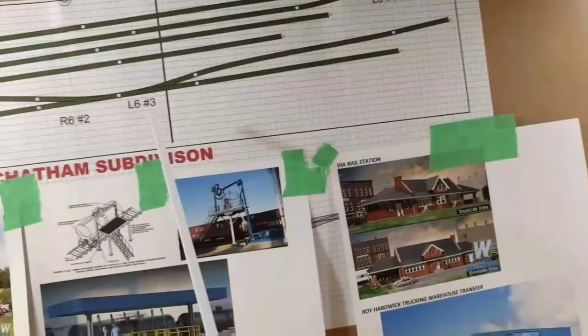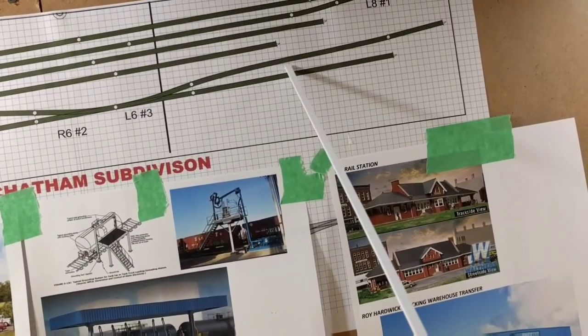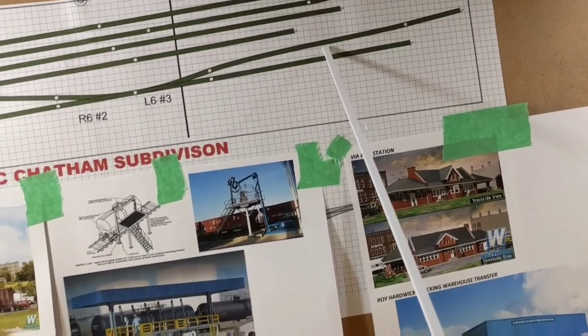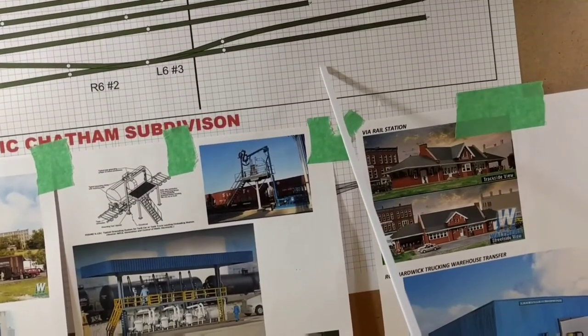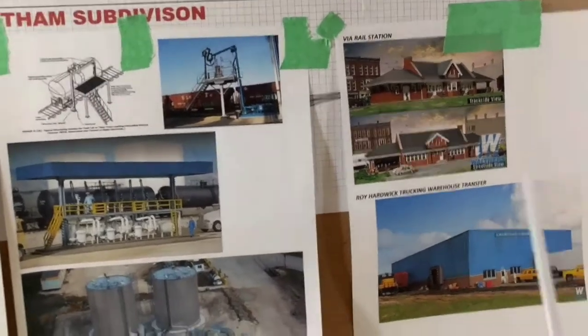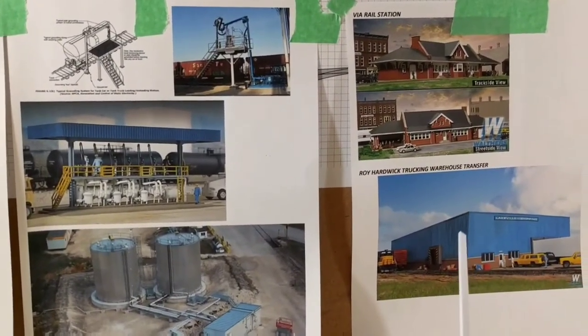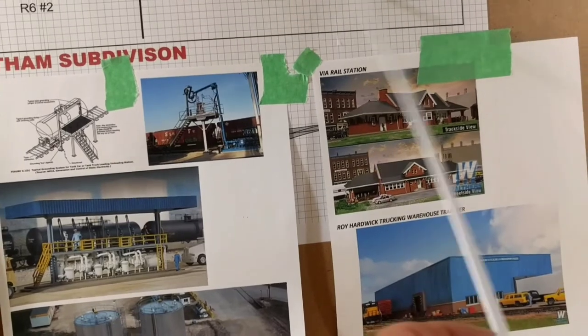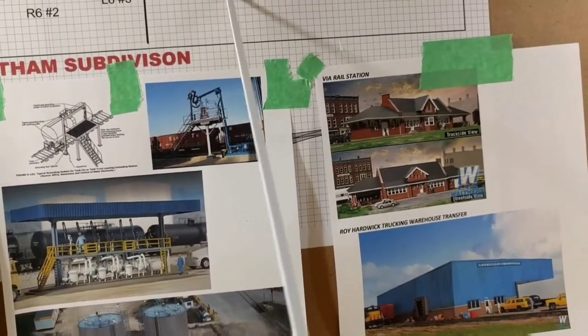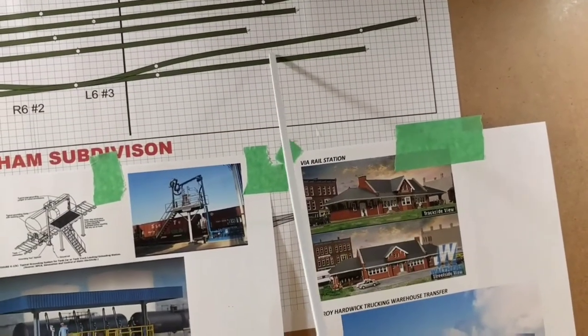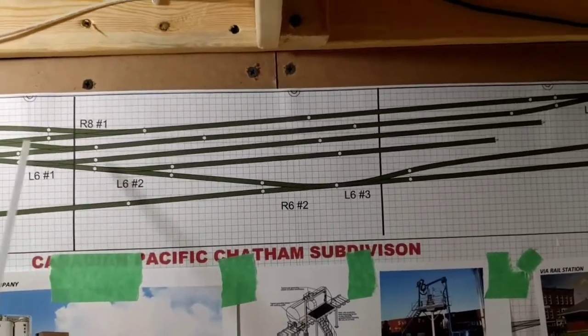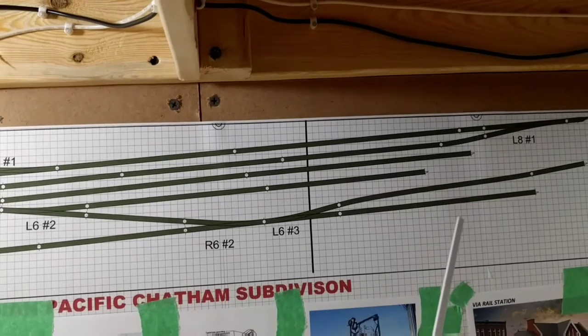On this side here, this is mainly gonna be run-through backup track, but it's also going to serve one or two cars. Here I'm gonna have a warehouse storage building, transfer building. It's a Walthers kit as well. I'm gonna have the doors facing this way for the trucks to drive up and the doors for the boxcar. So this is gonna be a boxcar track right here. This is gonna be a passing through track.